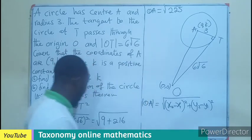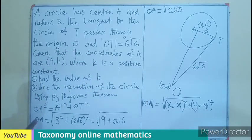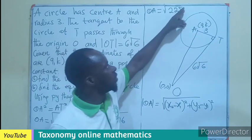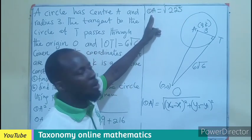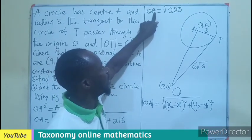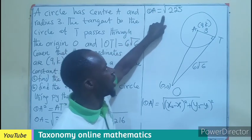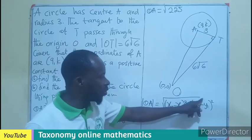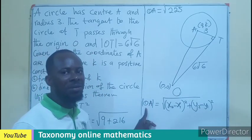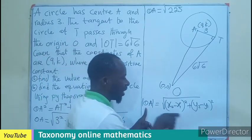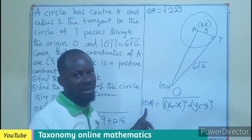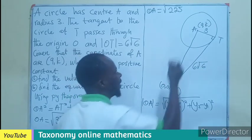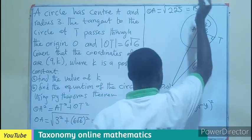As in, squaring both sides, this will be OA squared equals to 225. So in this case, I can decide to bring the square back on this so that I'll be having only the subtraction. Or let's just take our 15 and go.